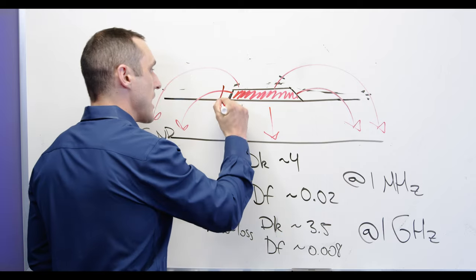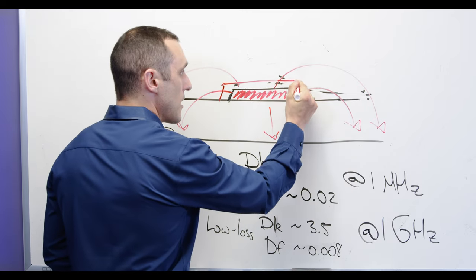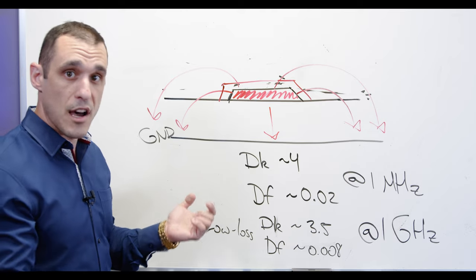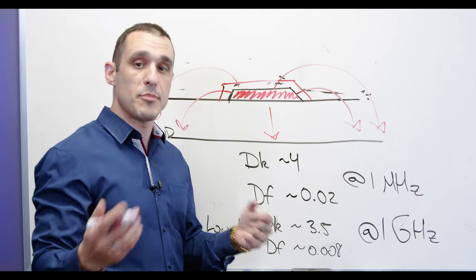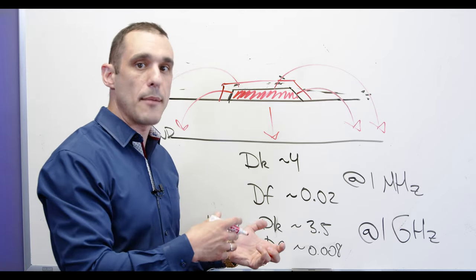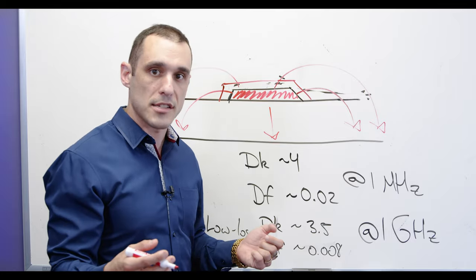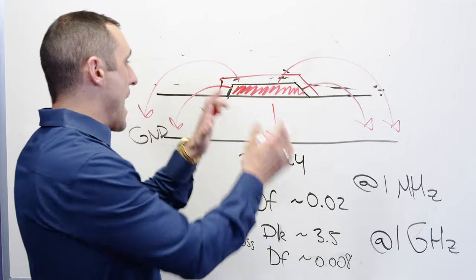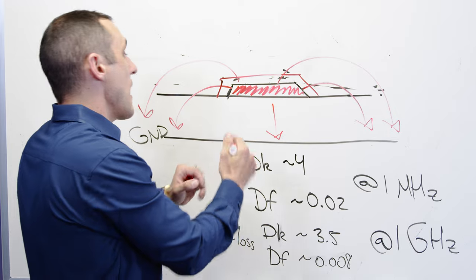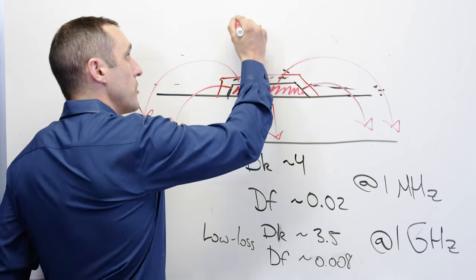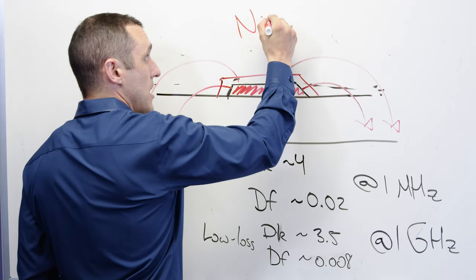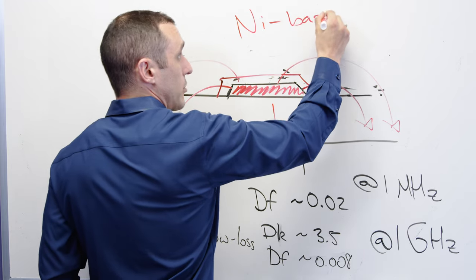The plating layer also affects the losses and specifically the type of material used to build up that plating will have an effect on losses. In general where we have this exposed microstrip line and we have a plating applied to it we would like to avoid where possible nickel-based platings.